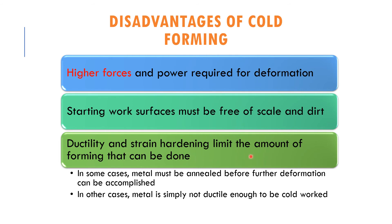Ductility and strain hardening limit the amount of forming that can be done. Since the material is not heated, ductility will not increase, so very complex parts cannot be produced, nor can parts from low-ductility materials. In some cases, metal needs to be annealed before further deformation, and in other cases metal is simply not ductile enough to be cold worked — it will fracture instead of forming properly.